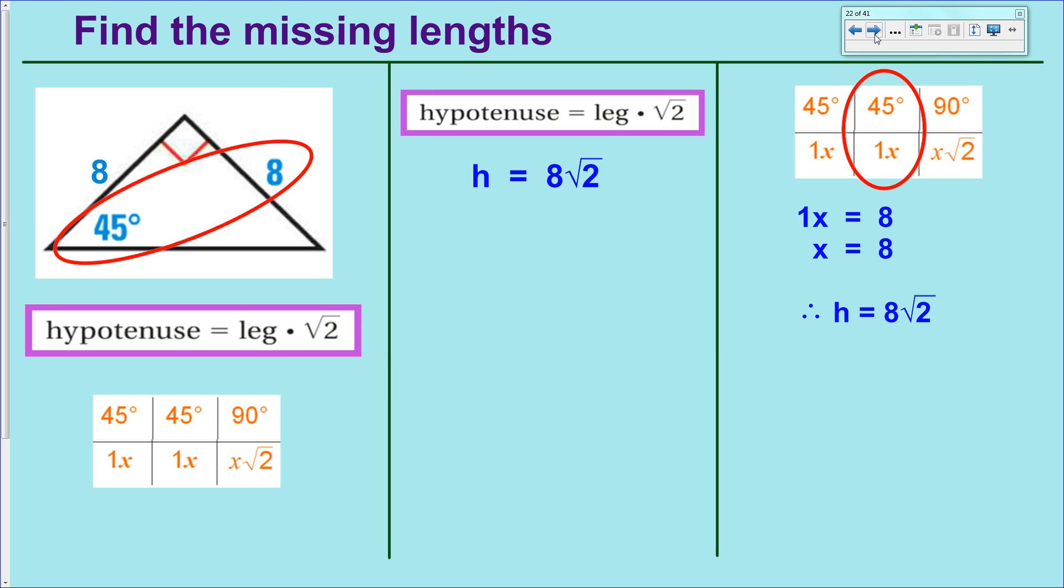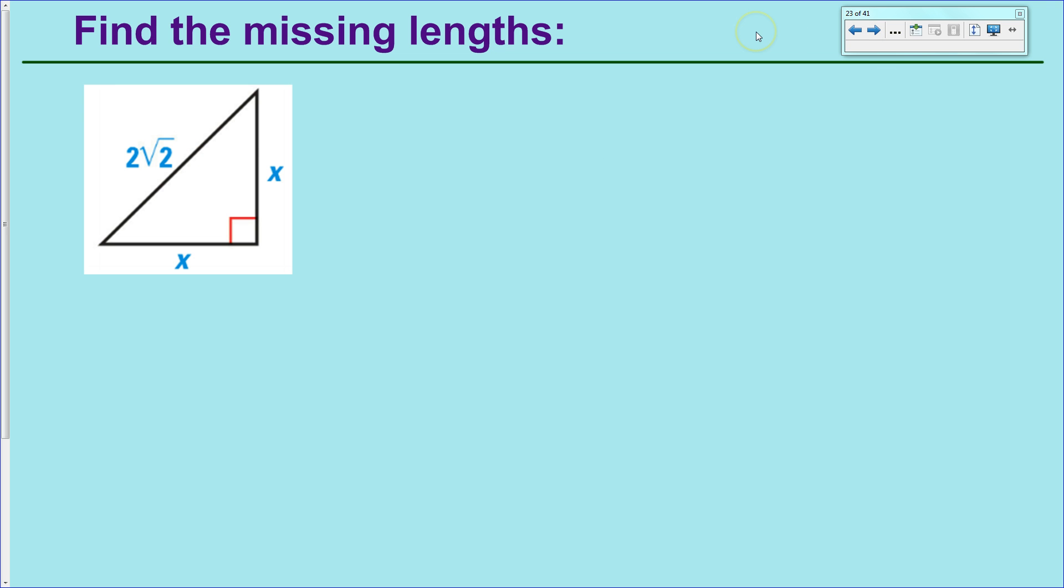Moving on to our second example. Here it is. We're going to find the missing links here. Okay, next example. Here we have another triangle, copied on the diagram, and you should be able to spot right away that this is another 45, 45, 90.